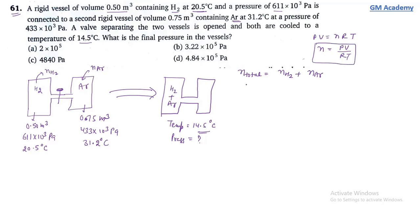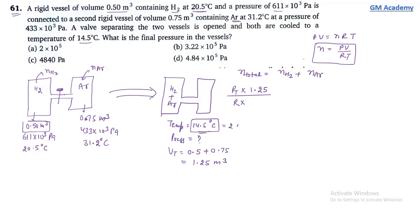Using the total moles expression: total pressure × total volume = total moles × R × T. Total volume = 0.50 + 0.75 = 1.25 meter cube. Final temperature = 273 + 14.5 = 287.5 Kelvin. We put 287.5 here.